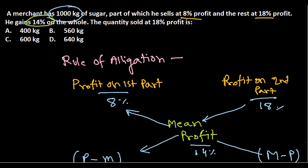600 kg is the quantity of the second kind. So here we go: what is the quantity sold at 18 percent? Remember, 18 percent means second kind, so here we go—600 kg. Option C is correct for this problem. That's it guys, thank you.